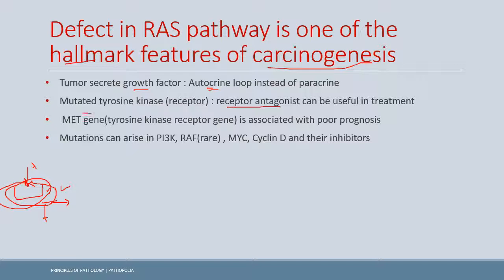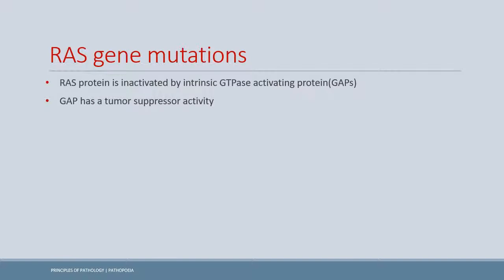The MET gene, a tyrosine kinase receptor gene, is associated with poor prognosis. It is usually seen in lung carcinomas and is involved in poor prognosis because it is a receptor gene for which we currently have no treatment. Mutations can also arise in PI3K, RAF, MYC, and cyclin D. Now let's discuss RAS gene mutations specifically.